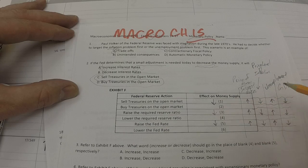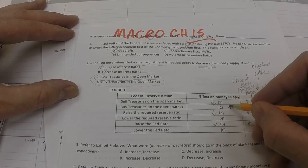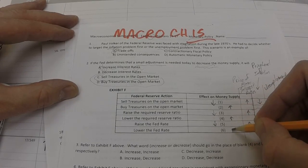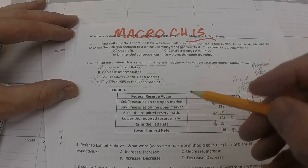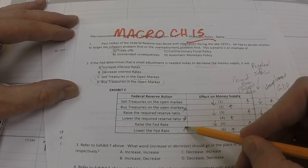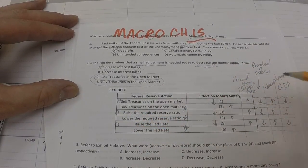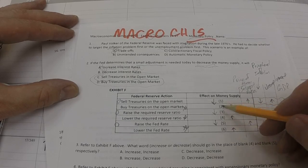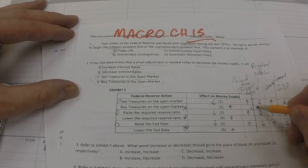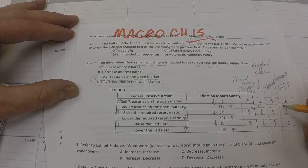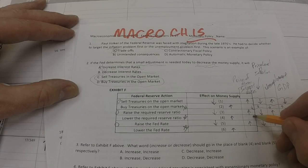And unfortunately, there's a tradeoff whenever we try to combat inflation, which is what Paul Volcker was doing in question one, that it's going to cause an increase in unemployment. So there's our columns right there as we move across. And if we wanted to finish out the chart, we'd say that any of the opposite movements in the money supply could be caused. Let's say an increase in the money supply could be caused by lowering the Fed rate, lowering the required reserve ratio, or buying treasuries on the open market. In other words, these three go together, and these three go together. And they're just three different tools of the Fed.